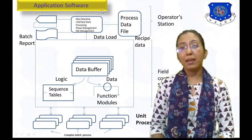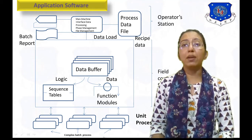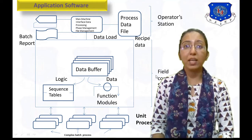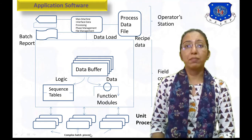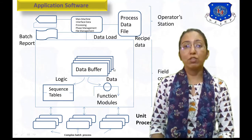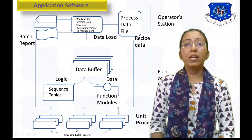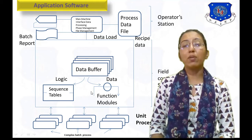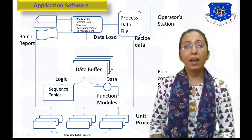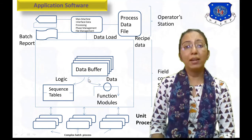Here, a schematic diagram of Application Software is shown. It includes Unit Process, Field Control Station, and Operators Station — all stations are available here. There is a Complex Mesh Process. In Unit Process, data is sent to the Field Control Station, and here we can send data bi-directionally.